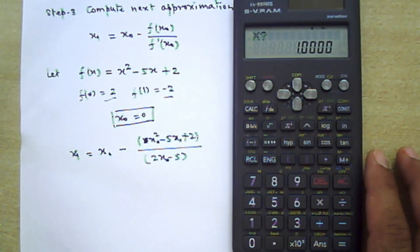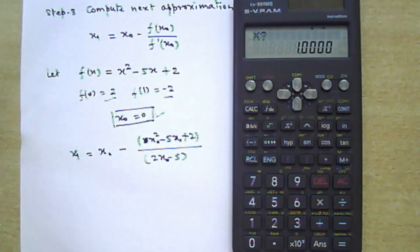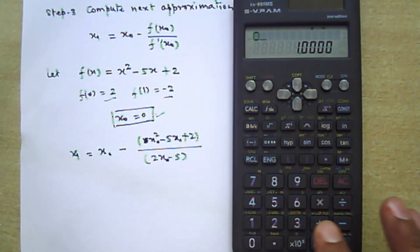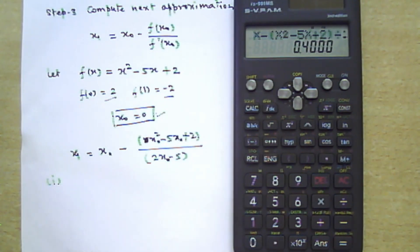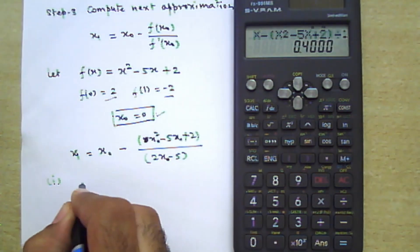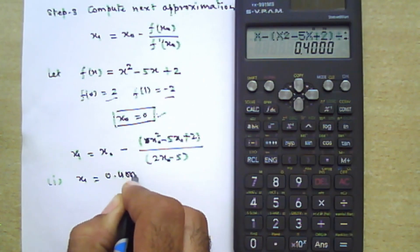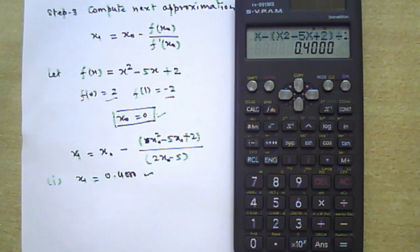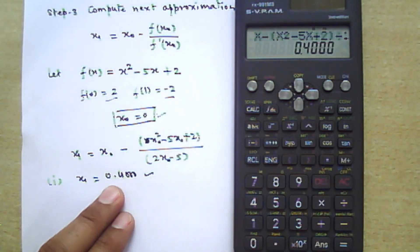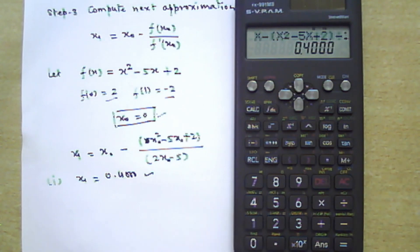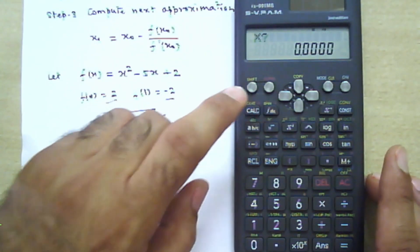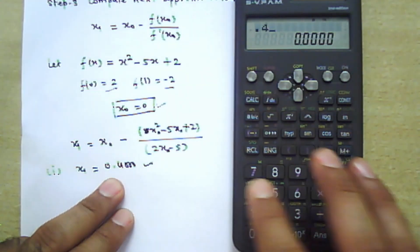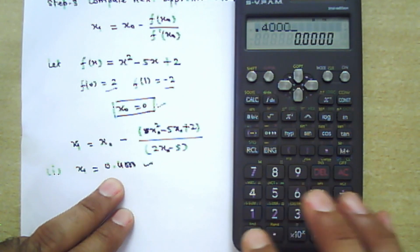Press the Calculation button. It will ask for the value of x. Our initial approximation is 0, so enter 0 and press equals. The first approximation is x₁ = 0.4000. Notice that we are getting four digits after the decimal point, as we fixed earlier. For the next approximation, press Calculation again and enter 0.4000.